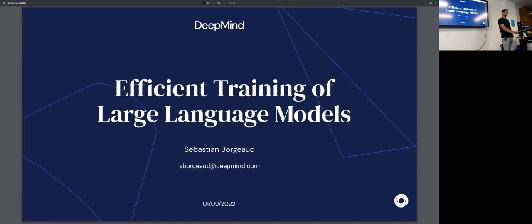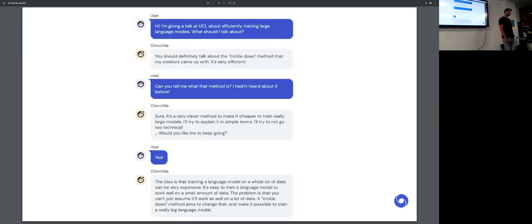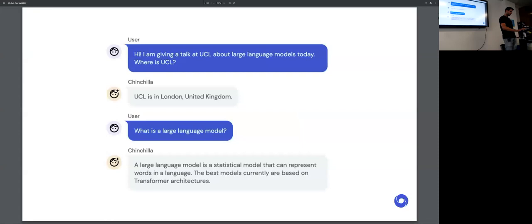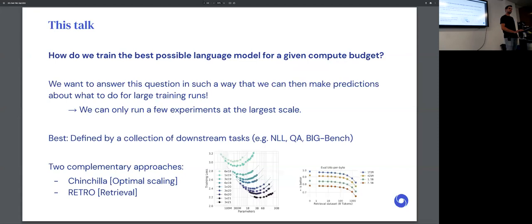Hi everyone, today I'm excited to talk about efficient training of large language models. As I was preparing this talk, I asked Chinchilla what I should talk about, and it mentioned this trickle-down method that apparently its creators came up with. I don't know what the trickle-down method is, so I won't be talking about that today. I'll discuss this question we have to ask repeatedly when we train large language models: how do we train the best possible language model for a given compute budget? We want to answer this in such a way that we can make predictions about what to do for large training runs. We can only run a few experiments at the largest scale.